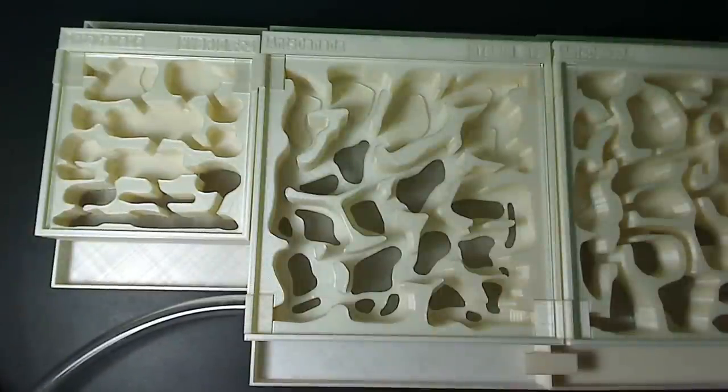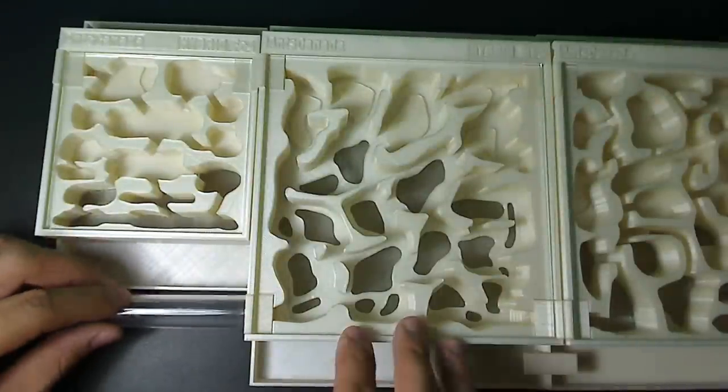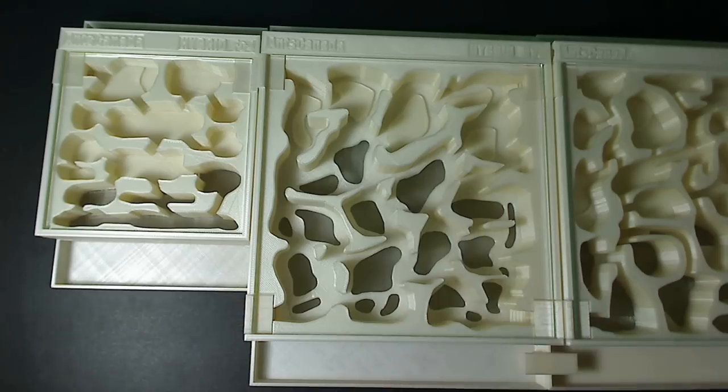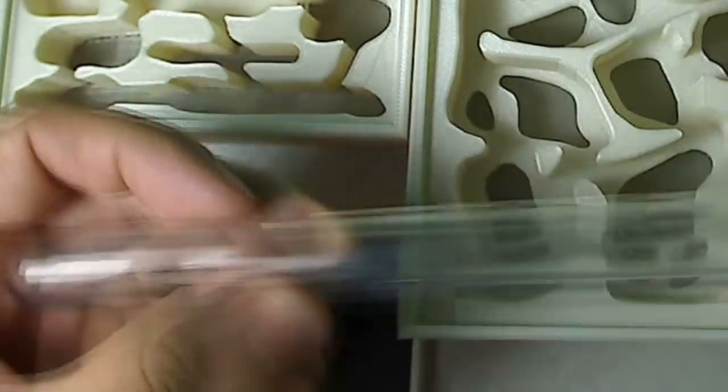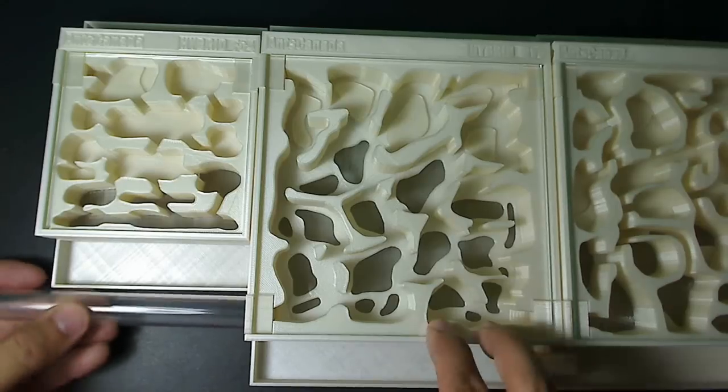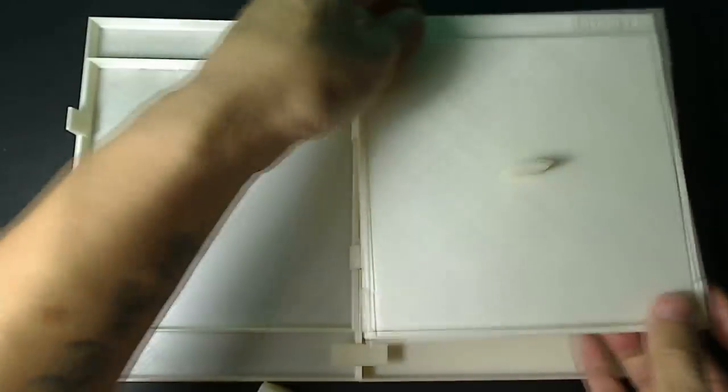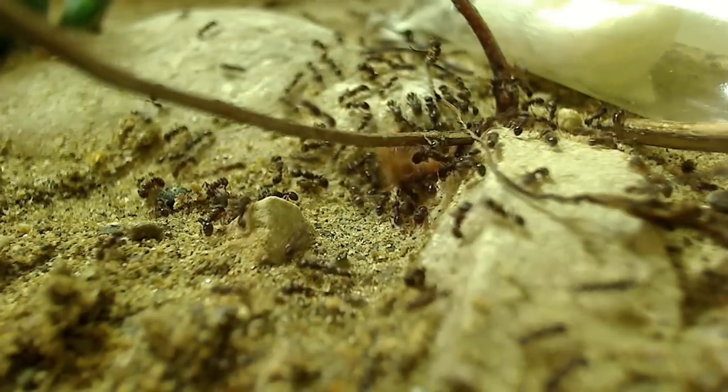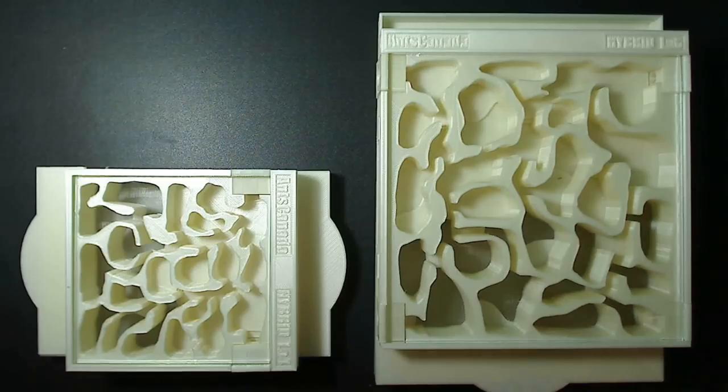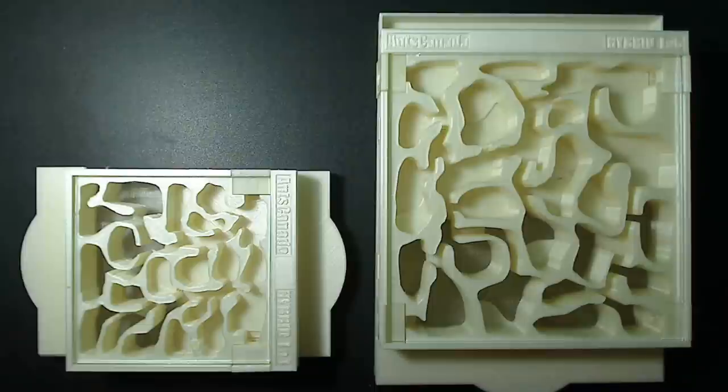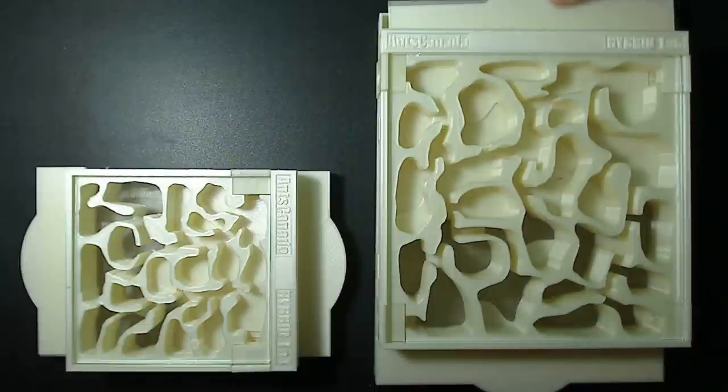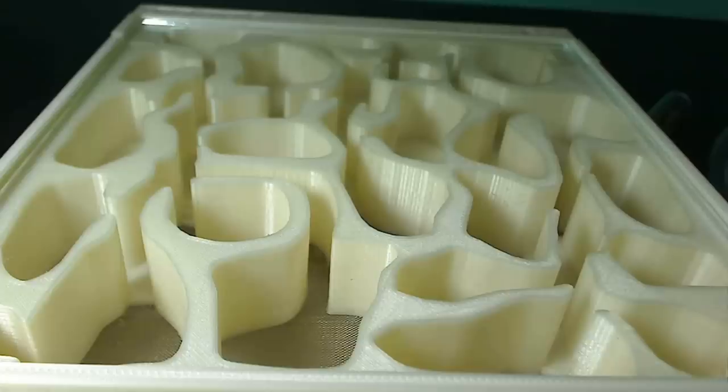And you can creatively use the exits to lead to other formicarium units, other outworlds, or even to another test tube full of water or sugar water. For those of you going on vacation for a week or two, now you don't have to worry about your ants running out of water. You can just simply fill test tubes up and attach them to your hybrid nest. But if you do go on vacation, don't forget to get somebody to feed them. The hybrid nest small comes with two exits, and the hybrid nest large comes with four exits. When you're not using an exit, remember to plug it with cotton.